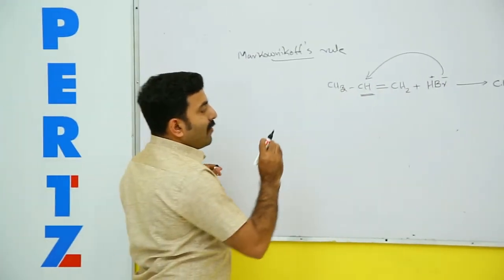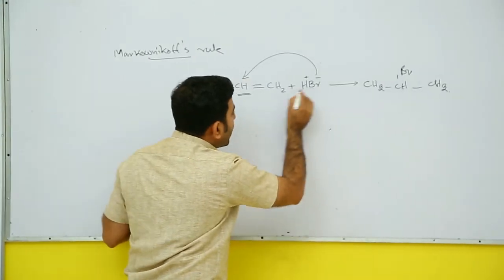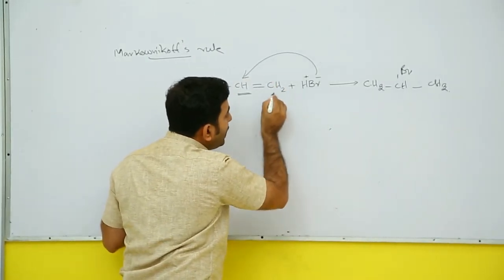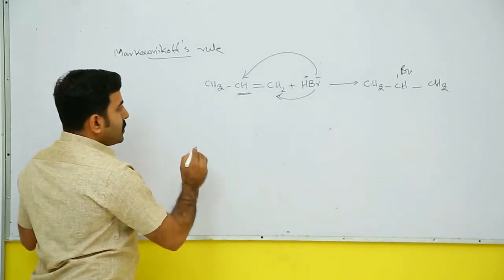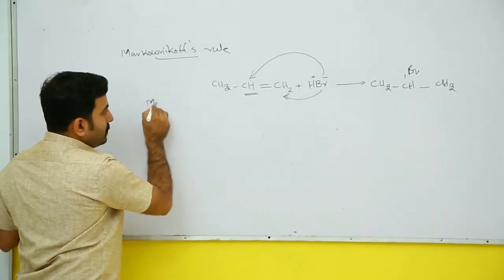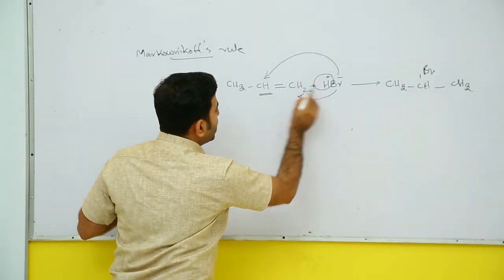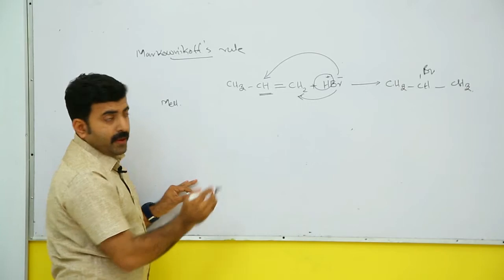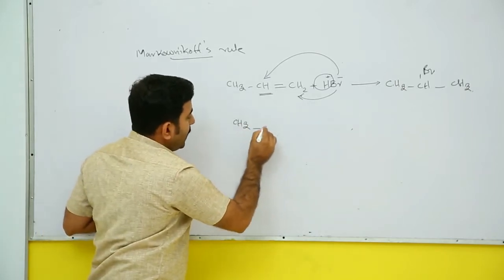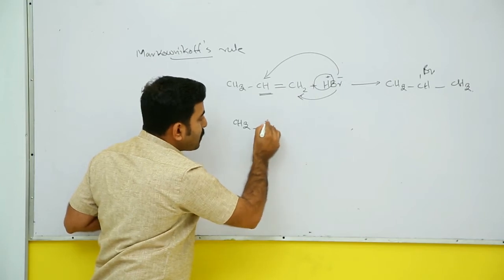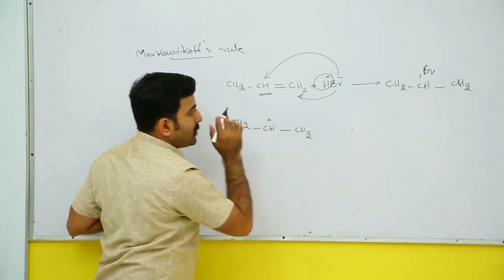Now we can check why this is the major product — why Br never goes to the carbon bearing CH2. We can check its mechanism. In the first step, H+ will attack the double bond. When H+ attacks, one possibility is CH3-CH+ and CH3, meaning the double bond shifts to this side giving a carbocation.